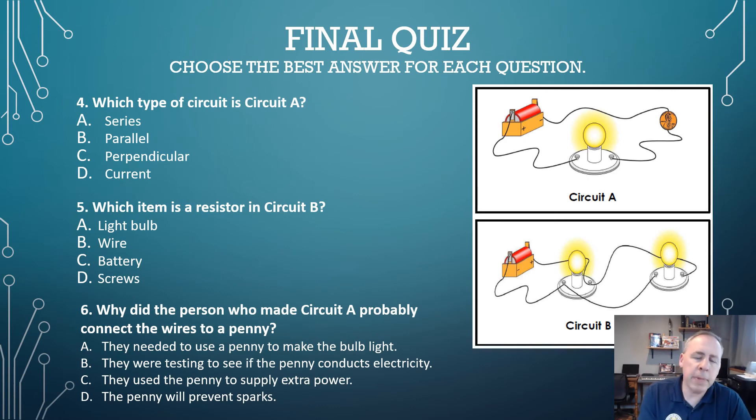All right. Question number four, which type of circuit is circuit A? So if you look at circuit A, we have a source or a battery, a load, which is the light, and a penny for some reason, they're using that. So if we look at the way things are in a little bit of what we would call circular pattern here, we would call this a what? A series, a parallel, perpendicular, or a current. Well, this is called a series circuit. And again, we didn't talk about that too much, but it's pretty apparent by the way things are designed in the circuit, that they're all in series, which means one after the other.